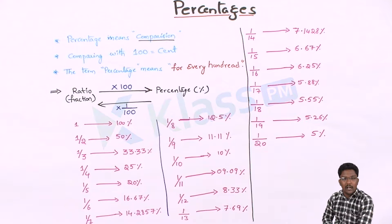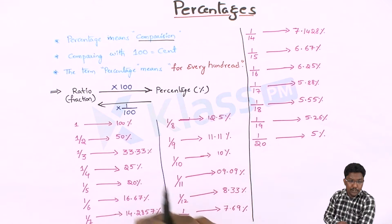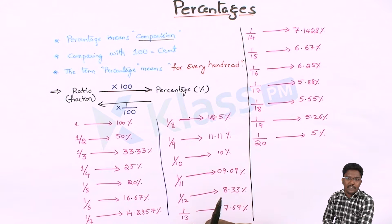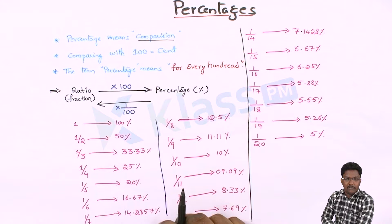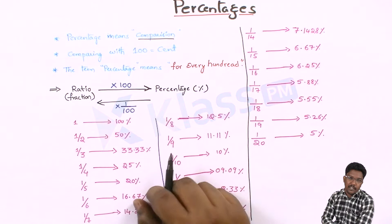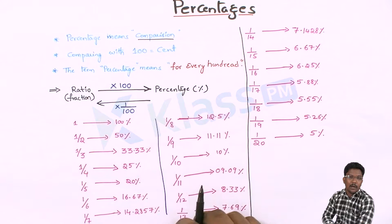Now the basic concepts we are discussing are: first, how to convert ratios or fractions to percentage, and percentage to fraction conversions. If you want to convert any fraction into a percentage, multiply that fraction by 100. If you want to convert a percentage into a fraction, divide that value by 100. Here are some examples.